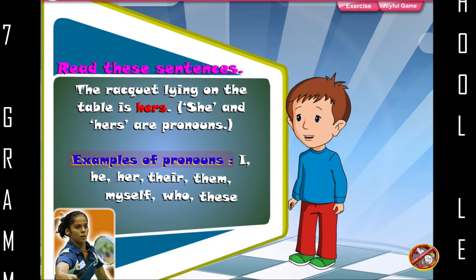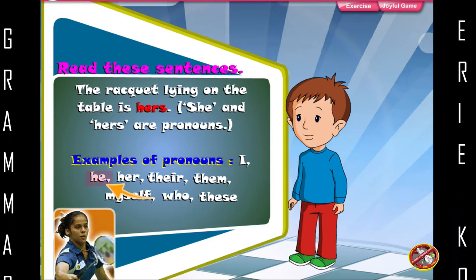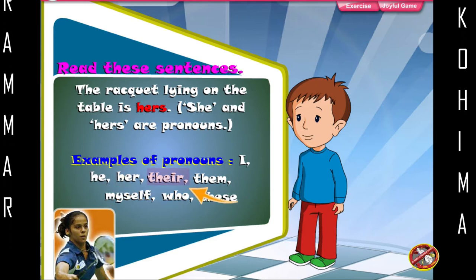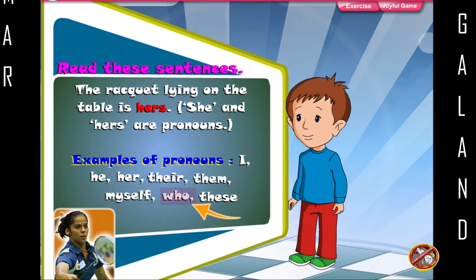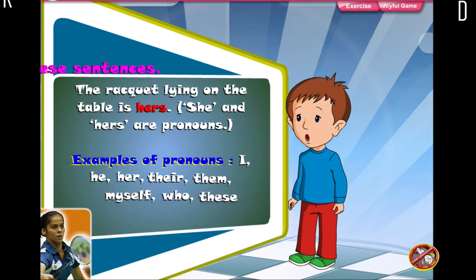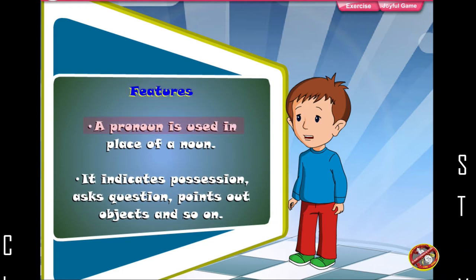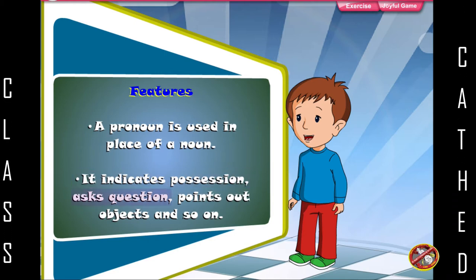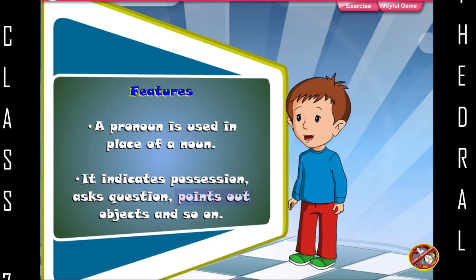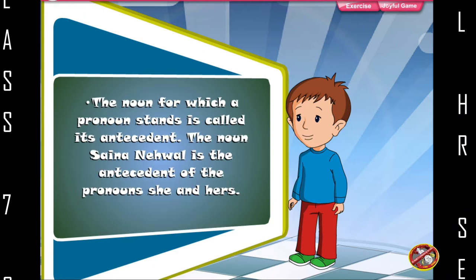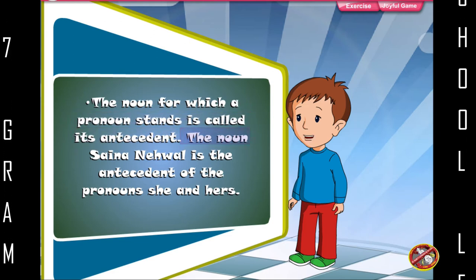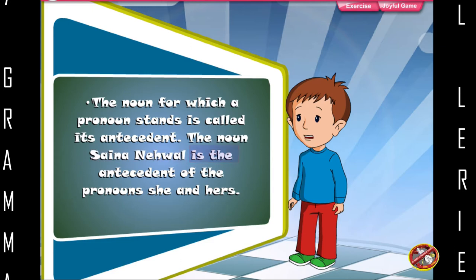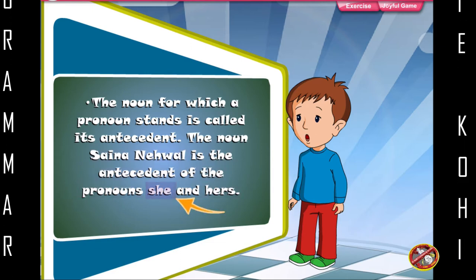Examples of pronouns: I, he, her, their, them, myself, who, these. Features: A pronoun is used in place of a noun. It indicates possession, asks questions, points out objects and so on. The noun for which a pronoun stands is called its antecedent. The noun Saina Nehawal is the antecedent of the pronouns she and hers.